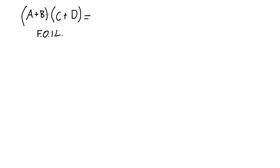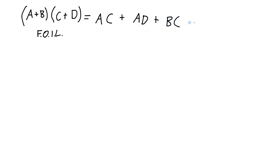So what we end up with is the first terms, a times c — or since we're doing Boolean algebra, this is going to be a AND c — plus (OR) the outside terms, a AND d, OR the inside terms, b AND c, OR the last terms, b AND d.